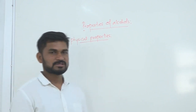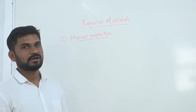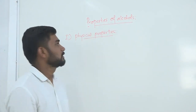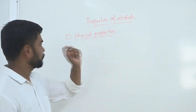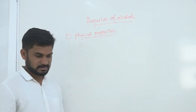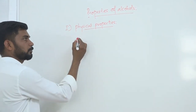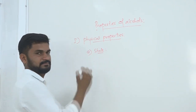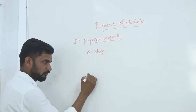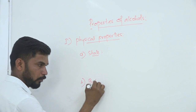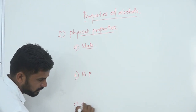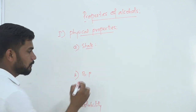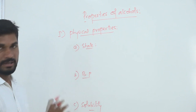In the last session we discussed about the preparation of alcohols. In this session we will be talking about the properties of alcohols. There are three common physical properties: physical state, boiling points, and solubility. These are the main three common physical properties of any organic compounds.